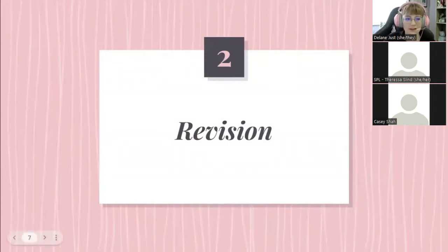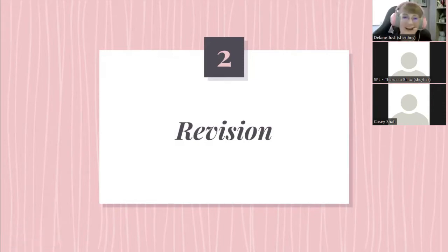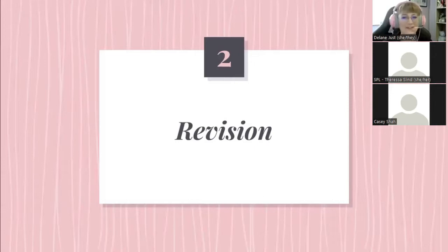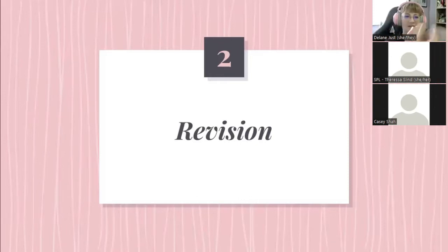Now that we hopefully have an understanding of what the crux might be, how can you actually put it to use? How might you look at your draft and figure out what it's really about, what other layers you could add to it, and then expand the story out while leading it towards that crux?